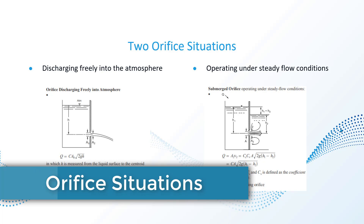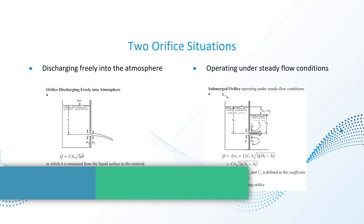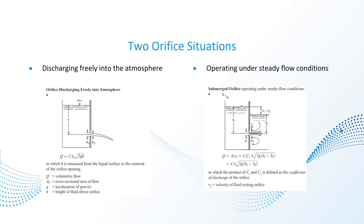There are two orifice situations that affect how it operates. The first is the orifice discharging water freely into the atmosphere — shown on the left — where water comes out of a tank and isn't surrounded by any more liquid; it's just discharging freely into the air. The situation on the right is where the orifice is submerged in water, so water is coming out through the orifice but there's also another height of water on the other side, meaning it's not discharging freely into the air.